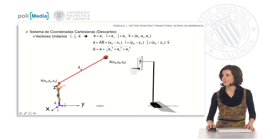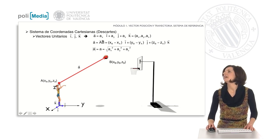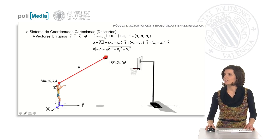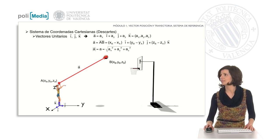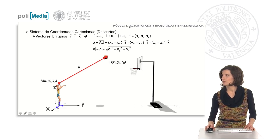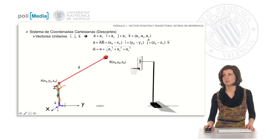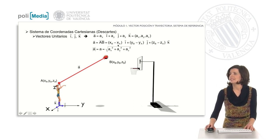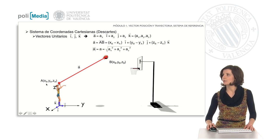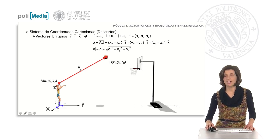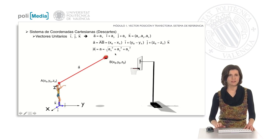If we call the components of vector a: a sub x, a sub y, and a sub z — the Cartesian components — the vector can be expressed as a sub x times the unit vector i, plus a sub y times the unit vector j, plus a sub z times the unit vector k. Although in other bibliographies the vector may be expressed only by its components a sub x, a sub y, and a sub z separated by commas. The components of the vector are calculated from the coordinates of the origin point and the end point; for example, the x component is the x coordinate of the end point minus the x coordinate of the origin point, and the same for y and z. To calculate the length of vector a — that is, its modulus — we calculate the square root of the sum of its components squared.